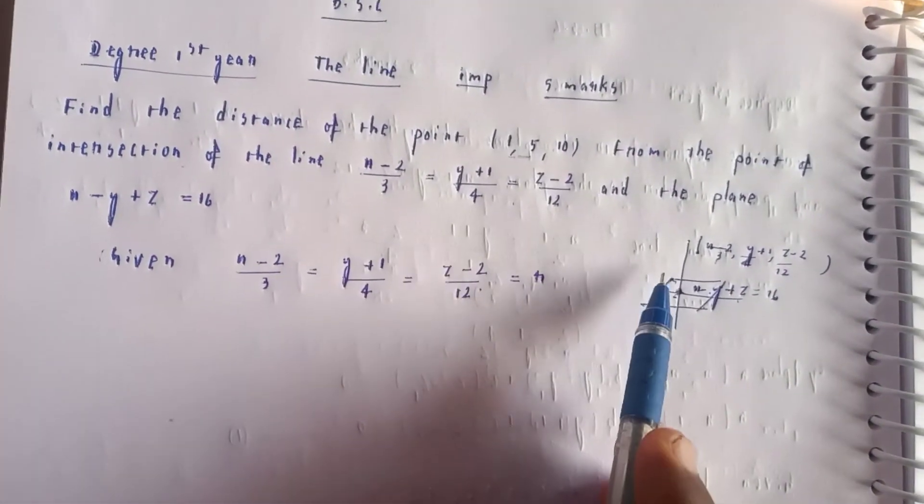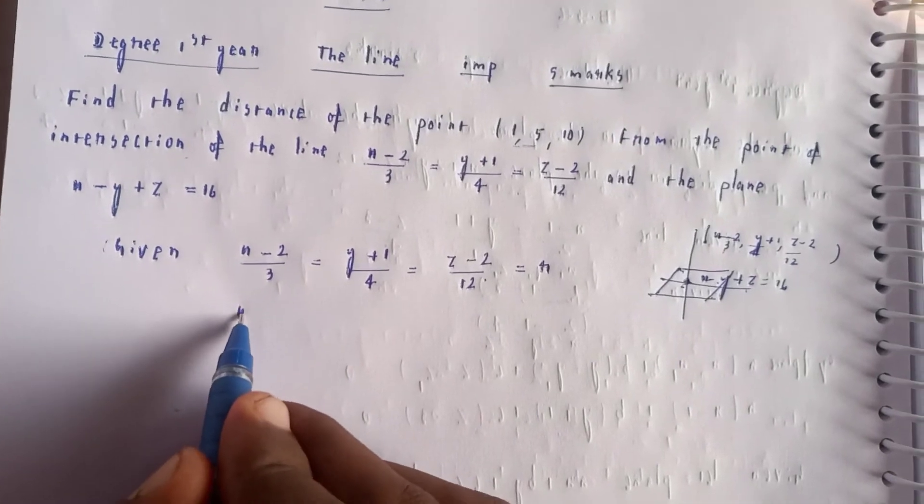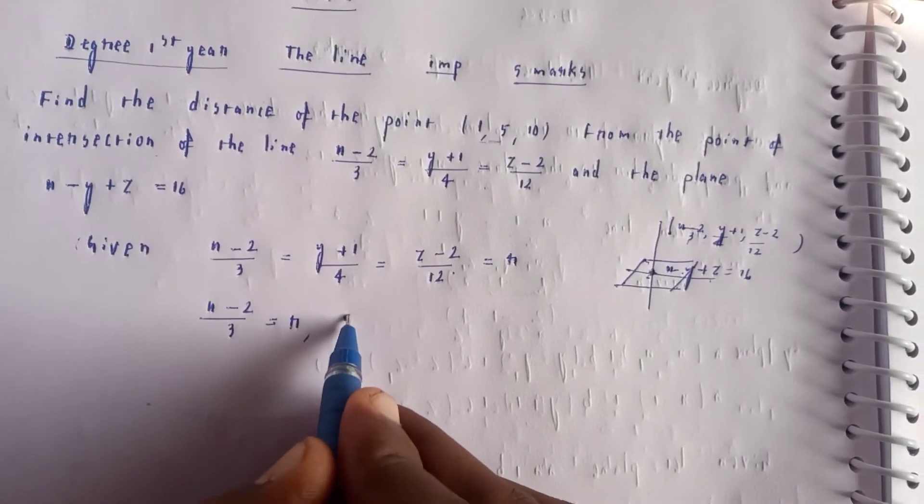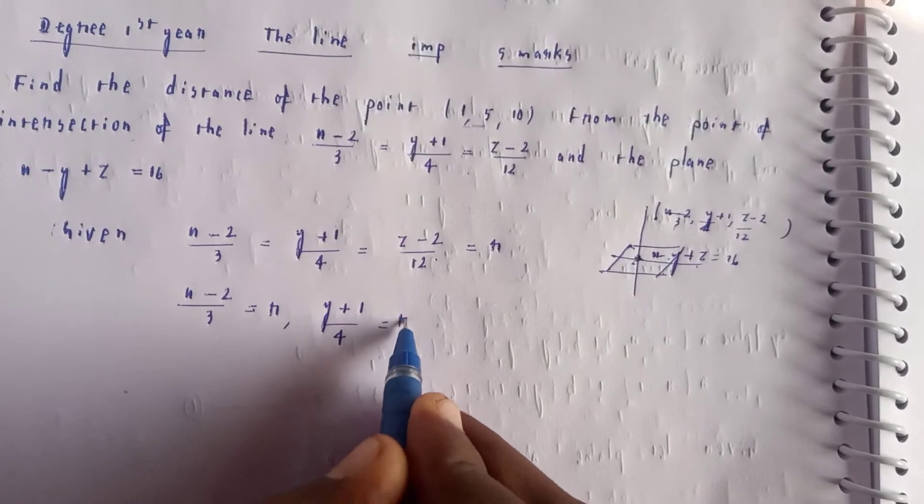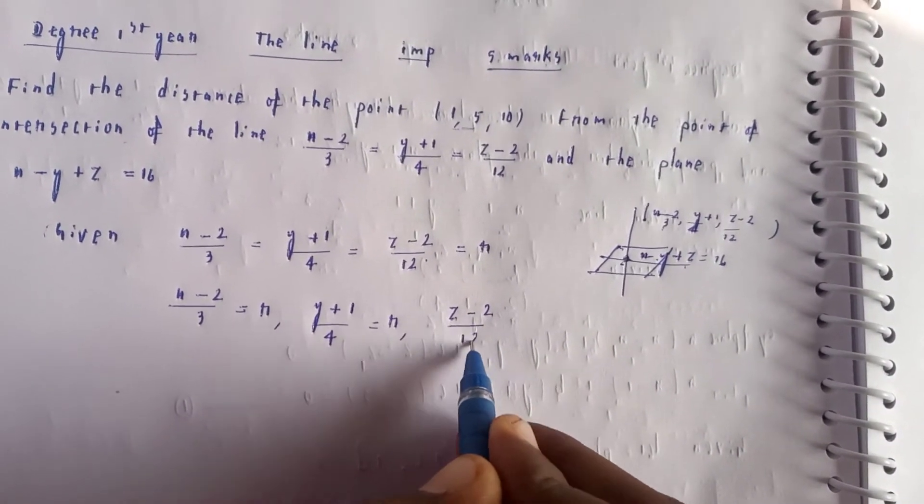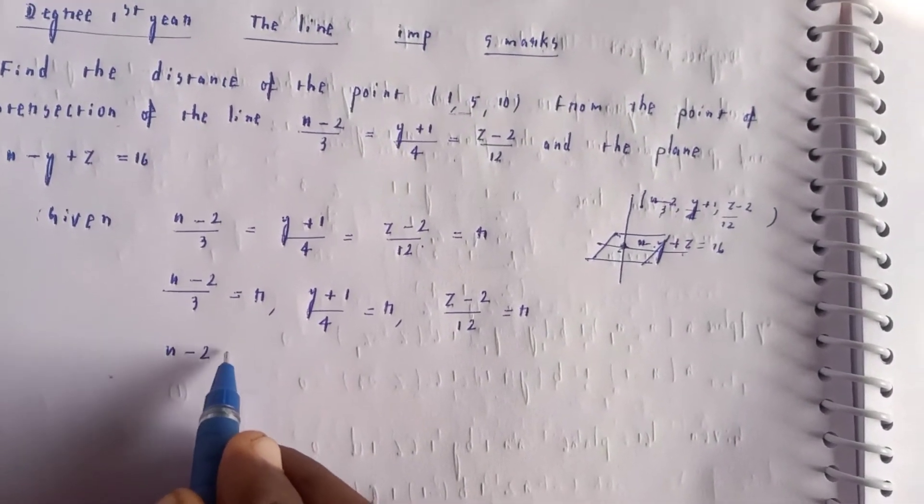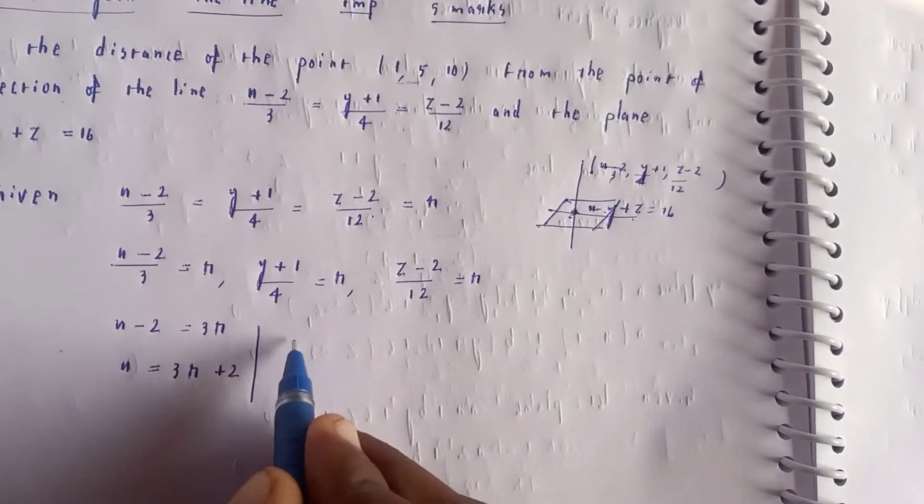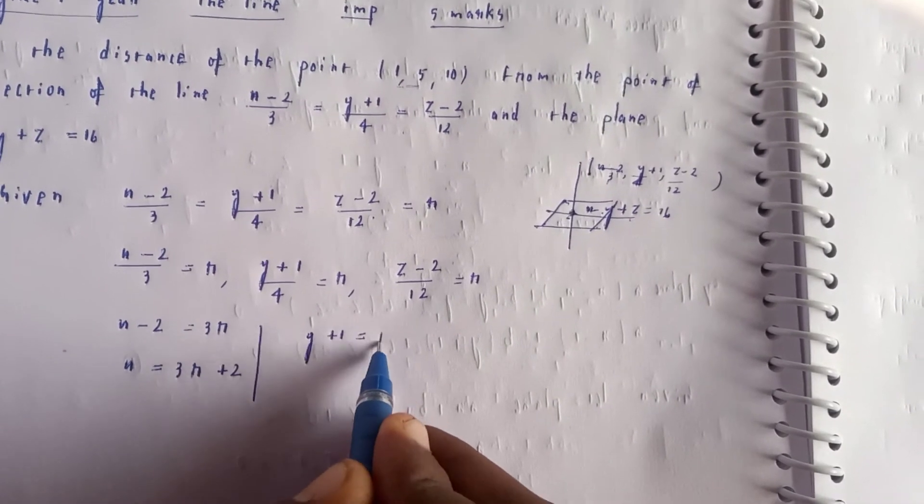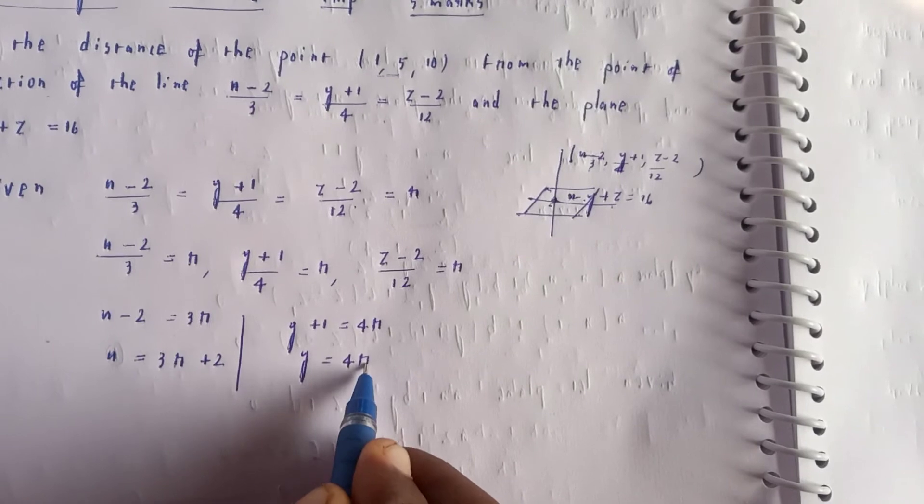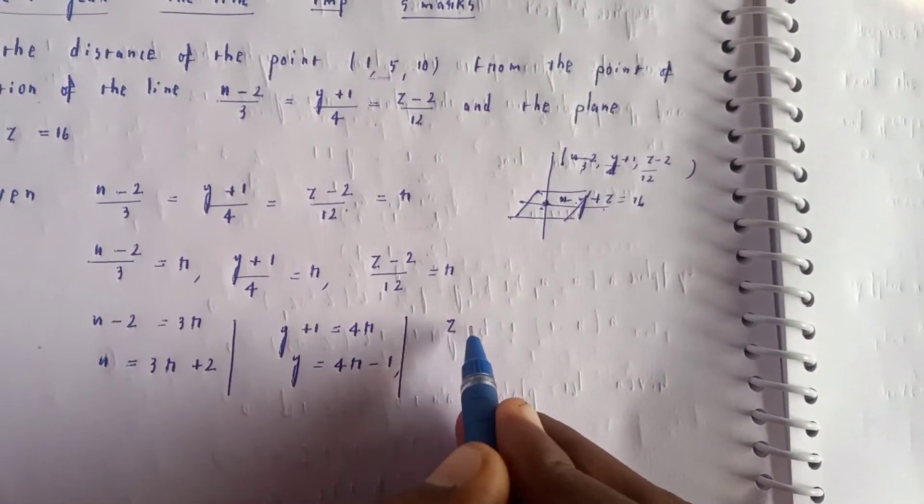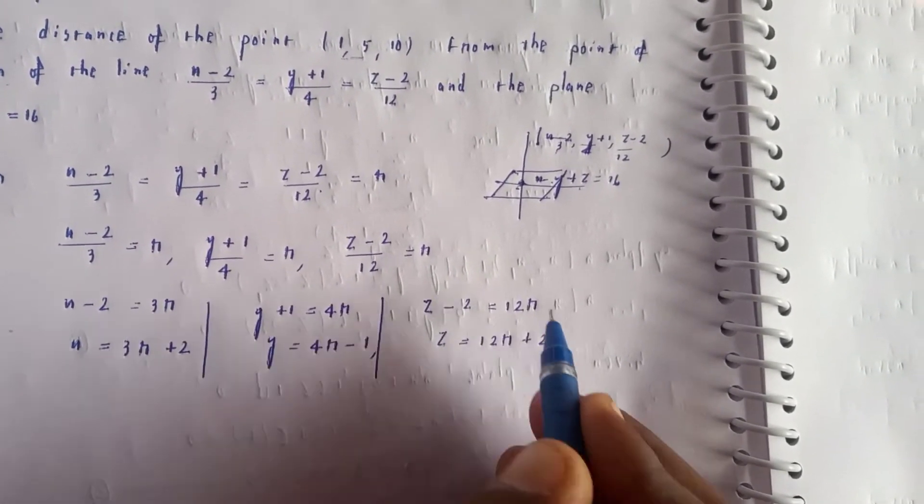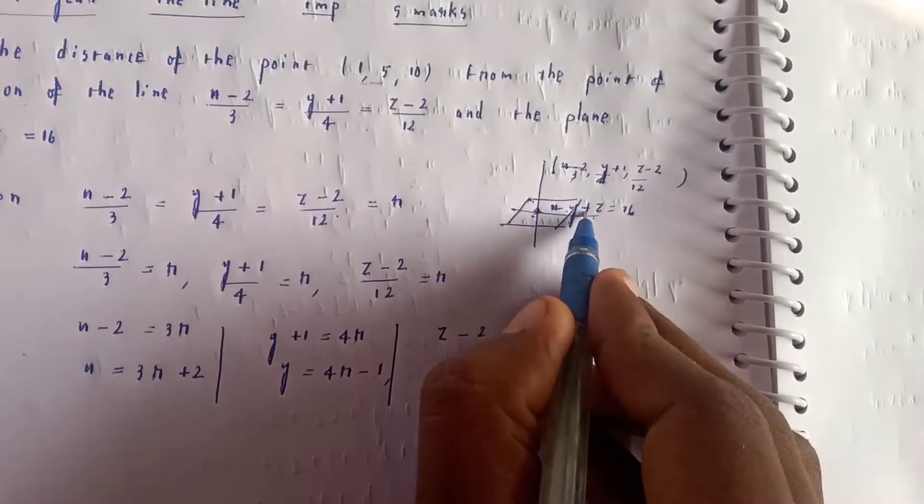The plane equation is x - y + z = 16. The line is (x-2)/3 = (y+1)/4 = (z-2)/12 = r. So x-2 = 3r, therefore x = 3r+2. y+1 = 4r, so y = 4r-1. z-2 = 12r, so z = 12r+2.